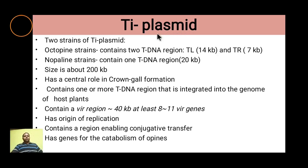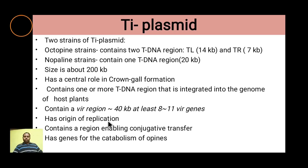Looking at Ti plasmid in detail: there are two strains — the octopine strain and the nopaline strain. The octopine strain contains two T-DNA regions, TL (T-left, 14 kb) and TR (T-right, 7 kb), whereas in the nopaline strain there is one region of 20 kb. The size of the Ti plasmid is about 200 kb and it has a central role in crown gall formation. It contains one or more T-regions integrated into the host plant genome, a virulence region of approximately 40 kb with 8–11 virulence genes, an origin of replication, a region enabling conjugative transfer, and genes for catabolism of opines.